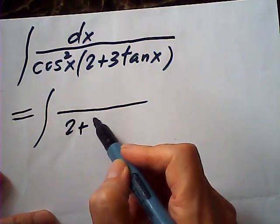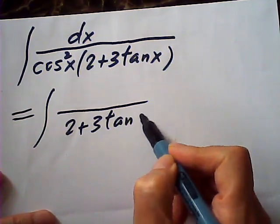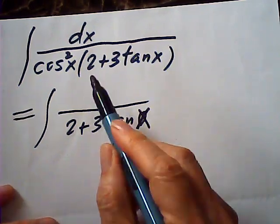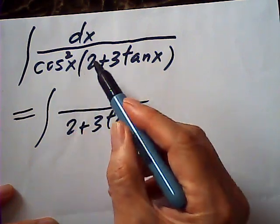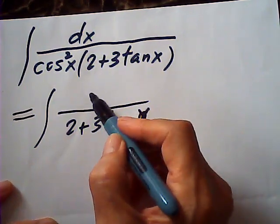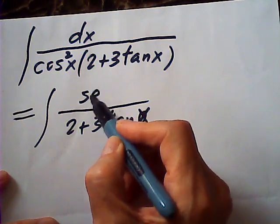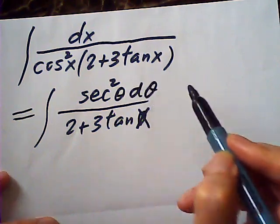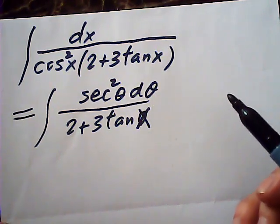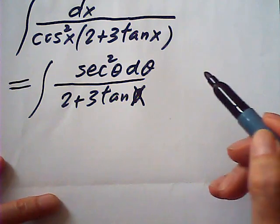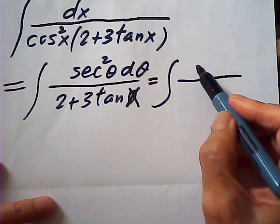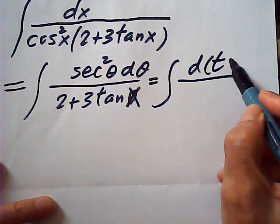This is 2 plus 3 tangent x, and the cosine, one of the cosines is a secant, so there is a secant square. Secant square theta d theta. Secant theta d theta is tangent, so this equals the derivative of a tangent.